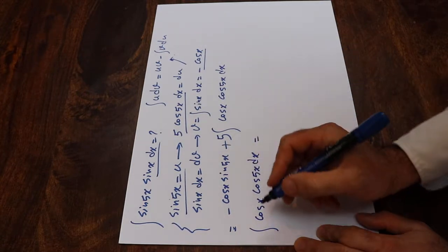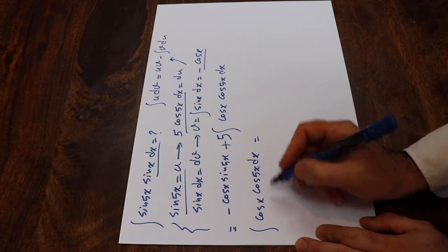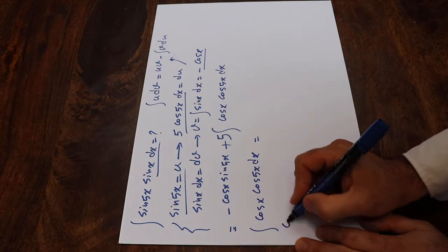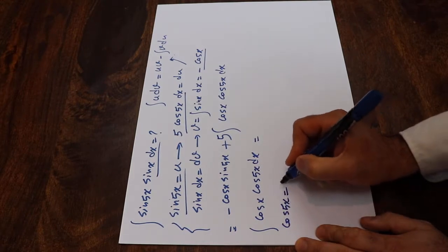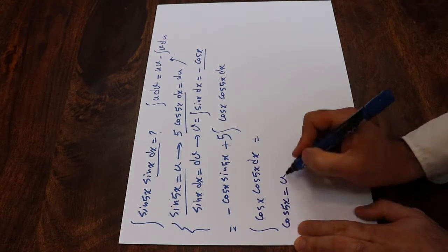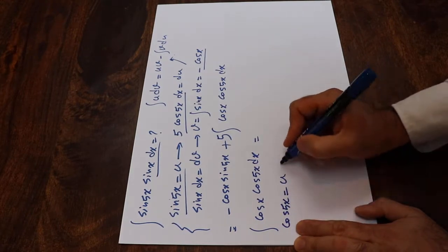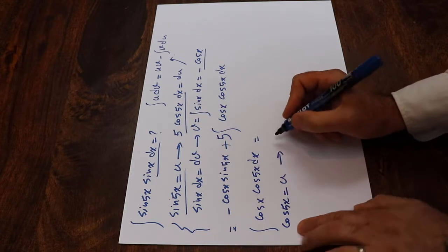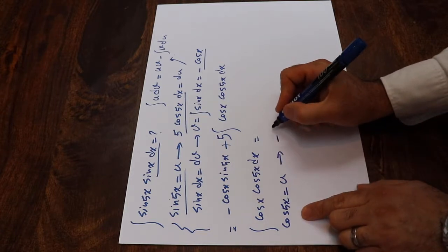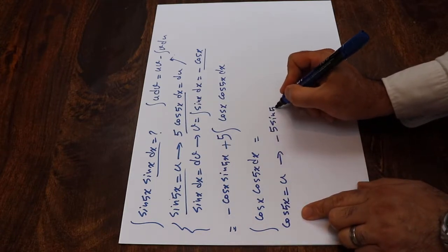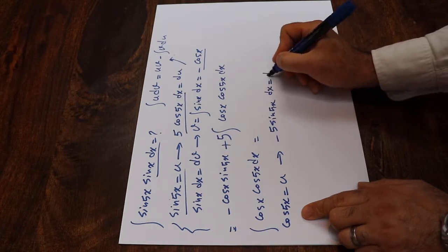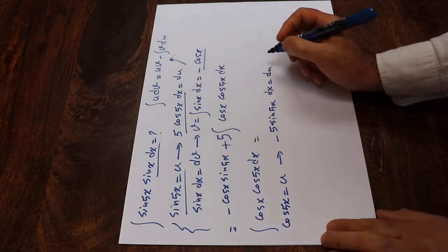To solve this integral, here I define cosine 5x as u. If you take the derivative from each side of this equation, that will be minus 5 sin 5x dx will be equal to du.